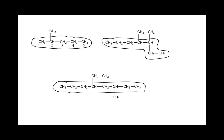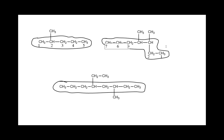For the seven-carbon compound, if I start numbering from one side, the first substituent is on carbon 4. From the other side, I reach the substituent on carbon 3. Since 3 is lower than 4, I number so this end is carbon 1, giving us 1, 2, 3, 4, 5, 6, 7 — with substituents on carbons 3 and 4.